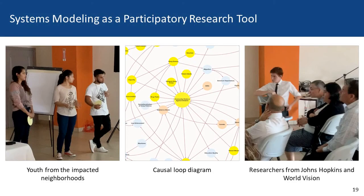Here I show how systems modeling can serve as a tool for participatory research. In the center of the causal loop diagram is the problem of interest: community violence against children. Arrows pointing inward come from factors that influence this problem, such as drug trade, impunity, and violent adults. Arrows emanating outward represent effects, including suicide and adverse child experiences.